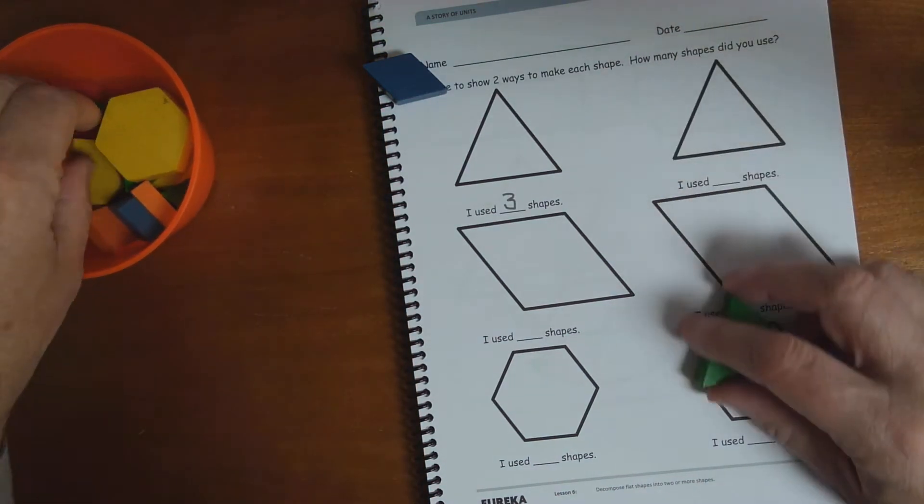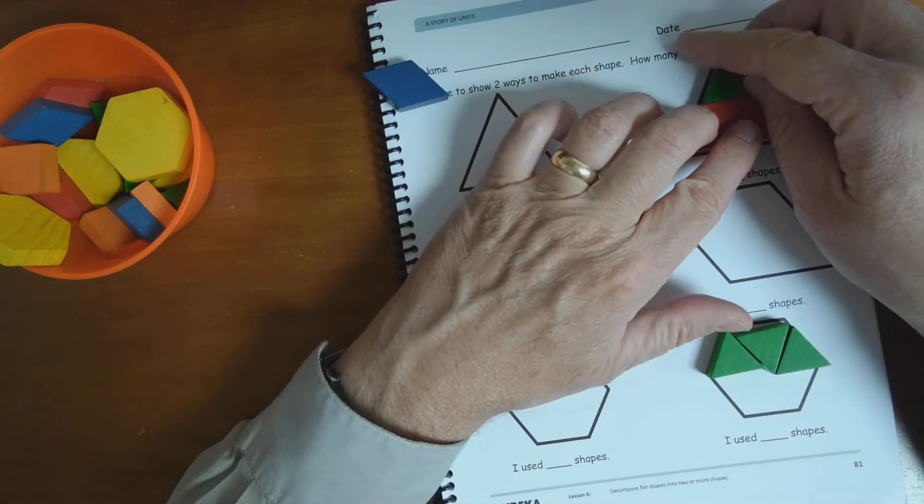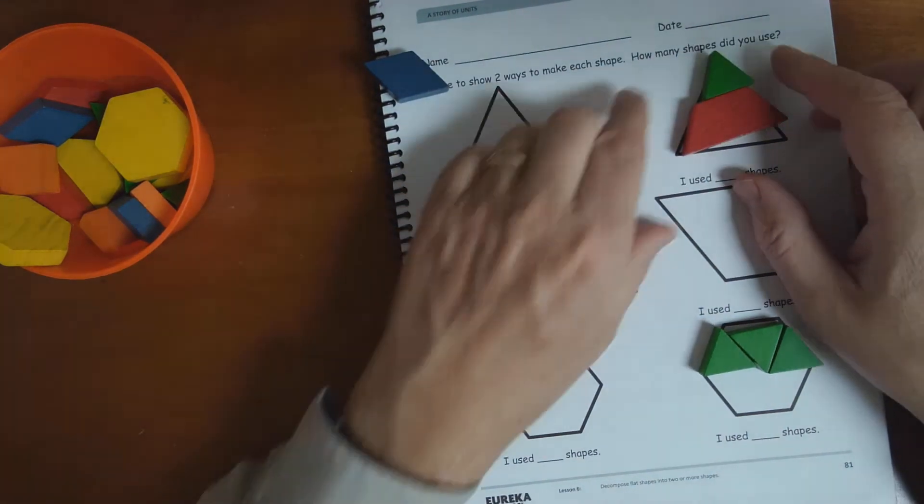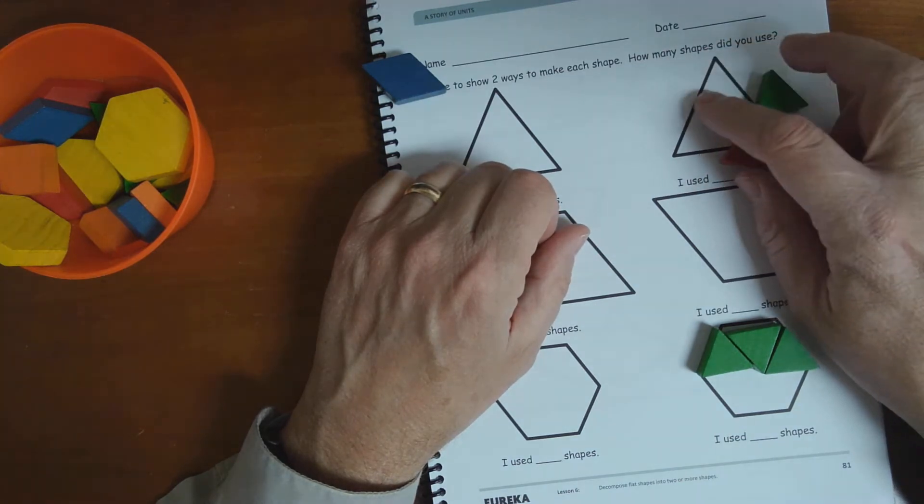But you know what I'm going to do? I'm going to try this. If I take this red one and put the triangle on top. Look, I made a triangle. And how many shapes did I use there? Just two shapes. And that would take a line.